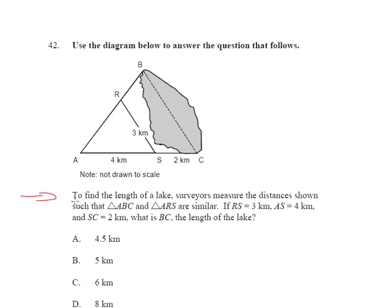It says, to find the length of a lake, surveyors measure the distances shown such that triangle ABC and triangle ARS are similar, meaning they can be compared and they've been increased at a similar rate for their size. If RS is equal to 3 kilometers,